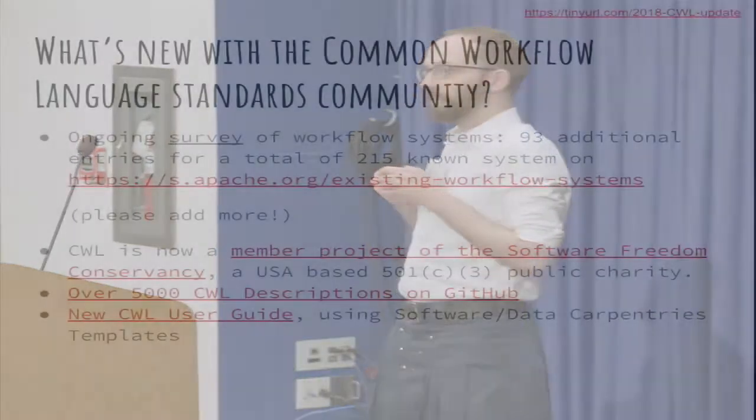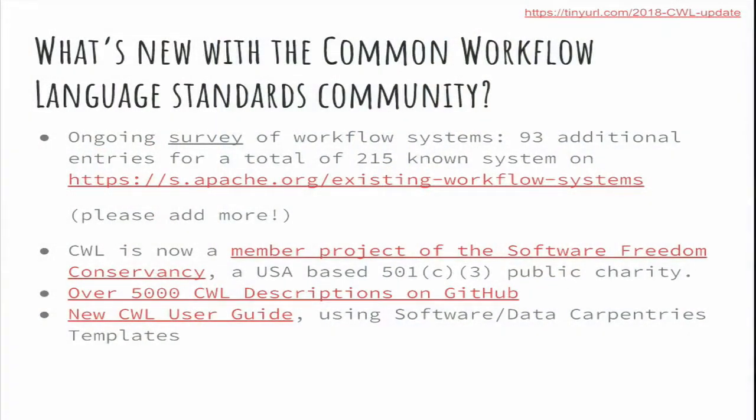GitHub now recognizes that CWL is its own language and will do syntax highlighting. You can search by file type for CWL descriptions, and you can click that link and see that there are at least 5,000 of them — though I bet a lot of those are forks, so I'm not saying they're all unique.